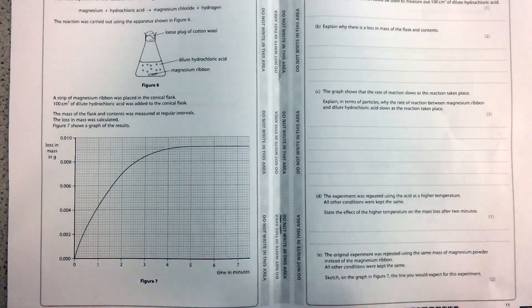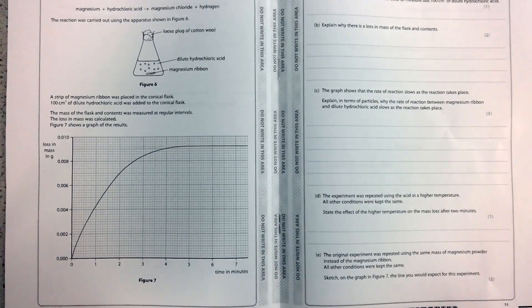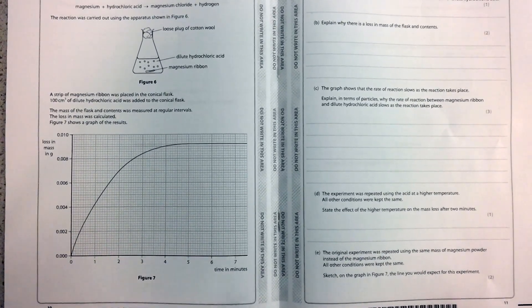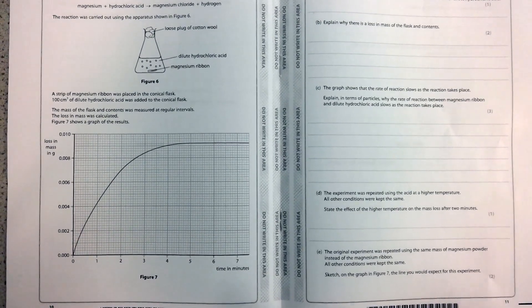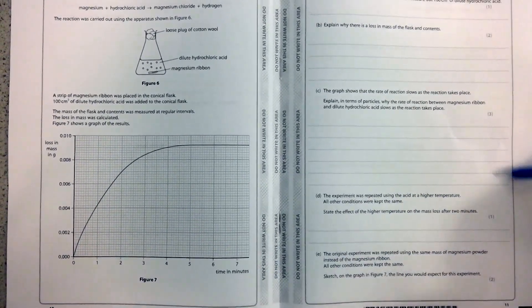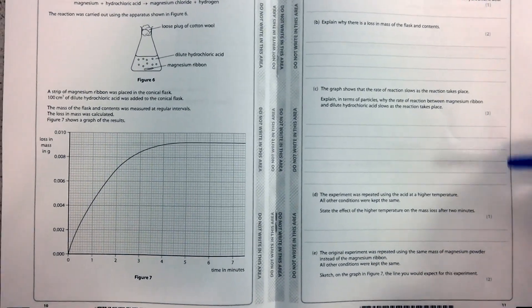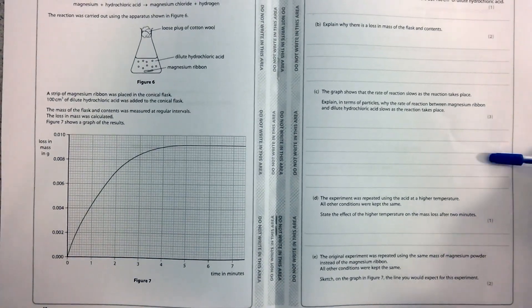For the next question, it's referring to the graph, which is here. So it says, the graph shows that the rate of reaction slows as the reaction takes place. It explains, in terms of particles, why the rate of reaction between magnesium ribbon and dilute hydrochloric acid slows as the reaction takes place. So this one's a bit more in-depth. This is requiring three marks. At the start of the practical, all the particles are reacting, so the collisions are going to be frequent. For the first mark,